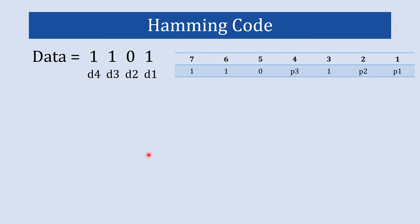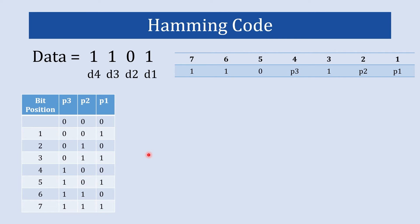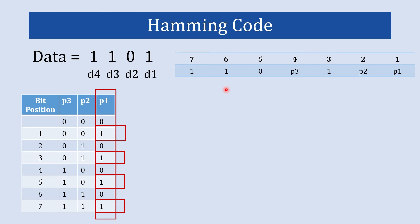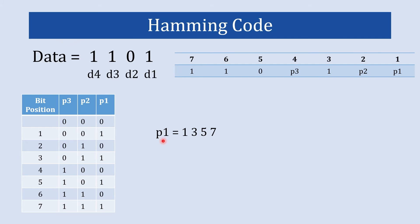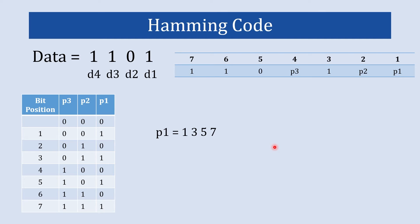Here is the table of bit positions and their binary representations. Parity bit P1 checks all positions where the least significant bit is set to 1 — positions 1, 3, 5, and 7. We exclude position 1 itself since P1 is placed there. Parity bit P2 checks all positions where the second least significant bit is 1 — positions 2, 3, 6, and 7.